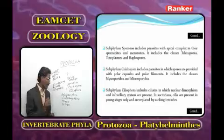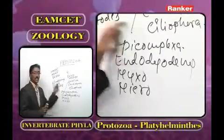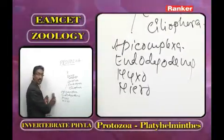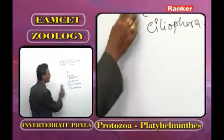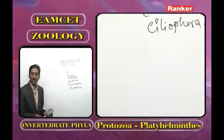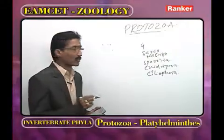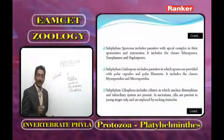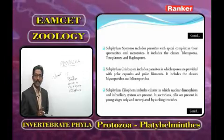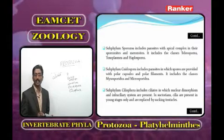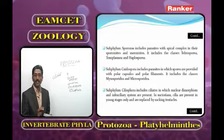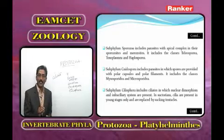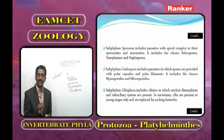The last subphylum is Ciliophora, the most advanced subphylum of Protozoa. Under Ciliophora, only one class is present — Ciliatea. The difference between Opalinata and Ciliophora is that in Opalinata the infraciliary system is absent, whereas in all ciliate animals the infraciliary system is present.